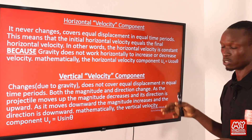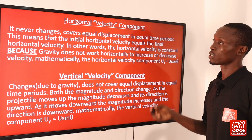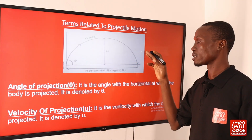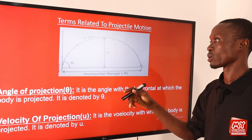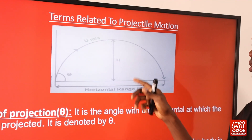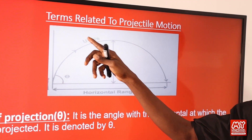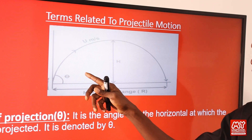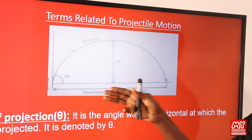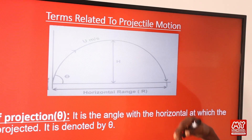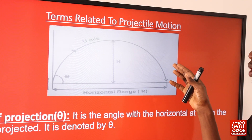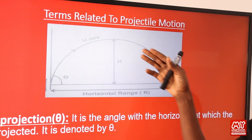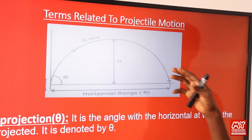Now let's discuss terms related to projectile motion. The diagram of projectile motion contains key symbols: u is the velocity of projection, H is the maximum height, θ is the angle of projection, and R is the range or horizontal distance. These symbols are very important — past questions often give this diagram and ask you to identify what each symbol represents.